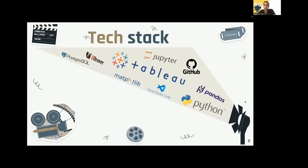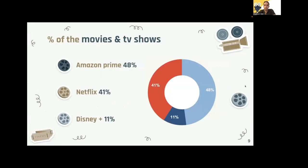In order to explore, clean, and visualize our datasets, we used the tools Python, SQL, Tableau, and many more. On this slide we can see the percentage distribution of content for movies and TV shows for each streaming platform. The first to lead is Amazon Prime with 48 percent of movie and TV show content.